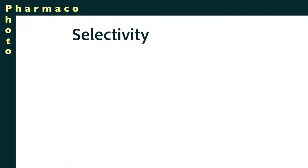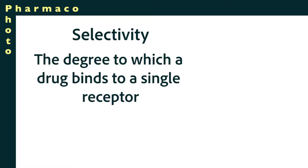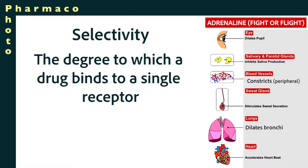Another concept we should overview right now has to do with selectivity — how selective a medication is for a certain receptor. I'll use the common example of the adrenergic drugs, the medications that mimic adrenaline, also called epinephrine. Recall that we use adrenaline in the fight-or-flight response when we're running away from something that's about to do us harm.